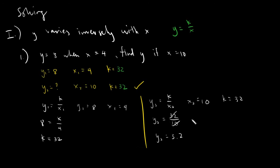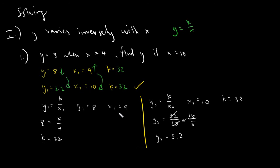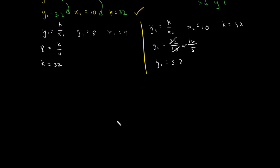We can also simplify this as a fraction: 32 over 10 reduces to 16 over 5, or simply the decimal 3.2. You will notice that as the x value increases from 4 to 10, since it's inverse variation, the y value will decrease — that's why the answer is 3.2. Inverse variation means if x increases, y decreases, and if x decreases, y increases.